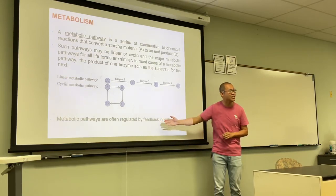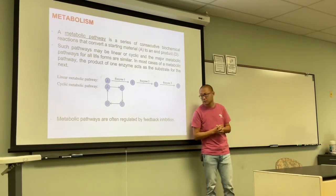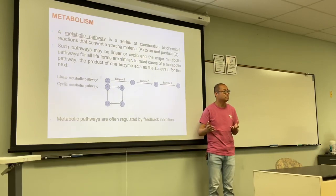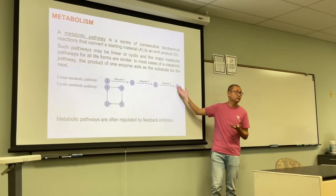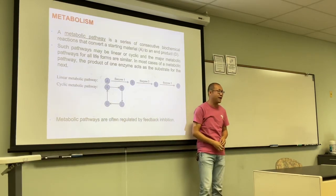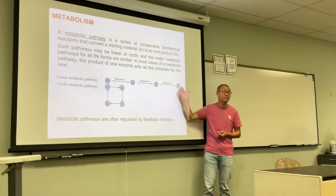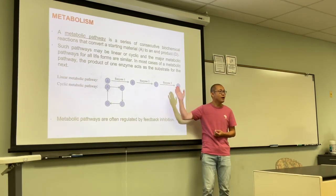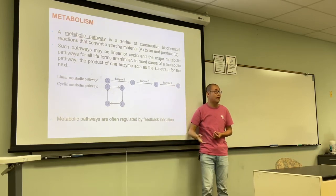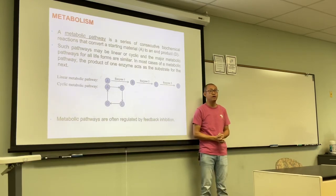As we discussed in chapter 10, these metabolic pathways are often regulated by feedback inhibition. The product inhibits the first enzyme of the metabolic pathway. This is a very smart way living things operate — the product tells the system whether to keep going or to stop and slow down. It's a smart nature design for regulation.